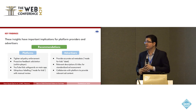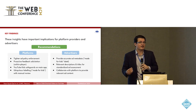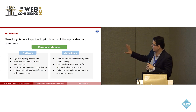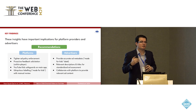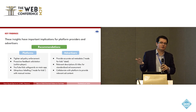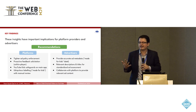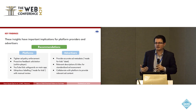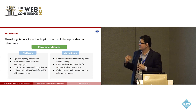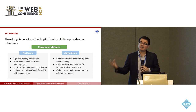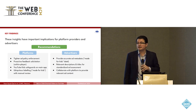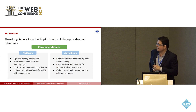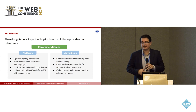Summarizing key findings, we believe there are important insights for different stakeholders. For platforms, there is a need for tighter ad policy enforcement and more proactive feedback solicitation from co-viewing parents. Currently, reporting an inappropriate ad requires leaving the main video and following a cumbersome multi-step process, so in-video reporting mechanisms are needed. Safeguards from YouTube Kids could also be borrowed onto the main app. For advertisers, more accurate ad metadata with relevant descriptions and titles is needed, along with greater collaboration between platforms and advertisers.